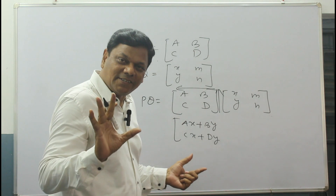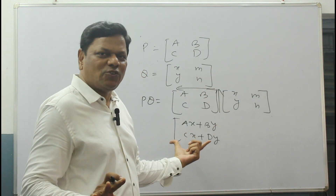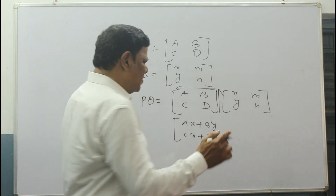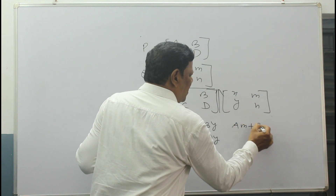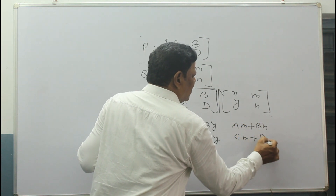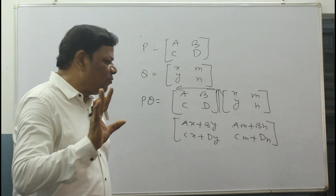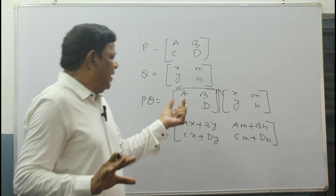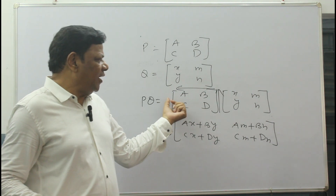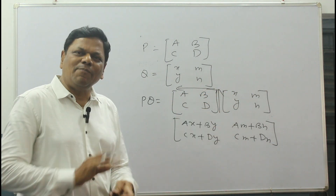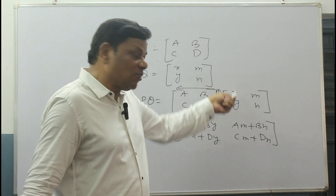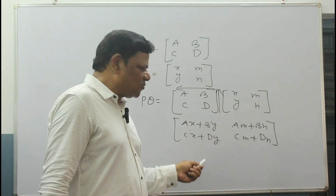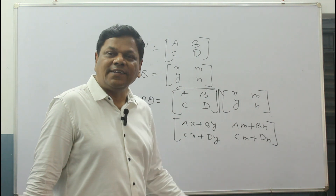If only X and Y are given in the column, the sum is done. But since M and N are also given, similarly multiply with the next column: A×M plus B×N, then C×M plus D×N. This is the rule I am giving you — not from the book, but a method to remember easily. The formula is: AX+BY, CX+DY for the first column, and AM+BN, CM+DN for the second column. Do the arithmetic and that is your answer.